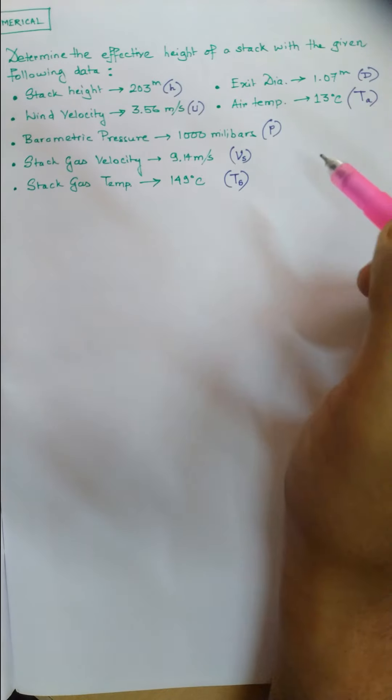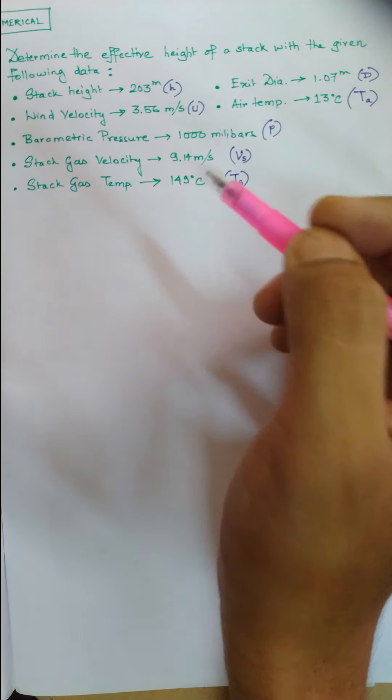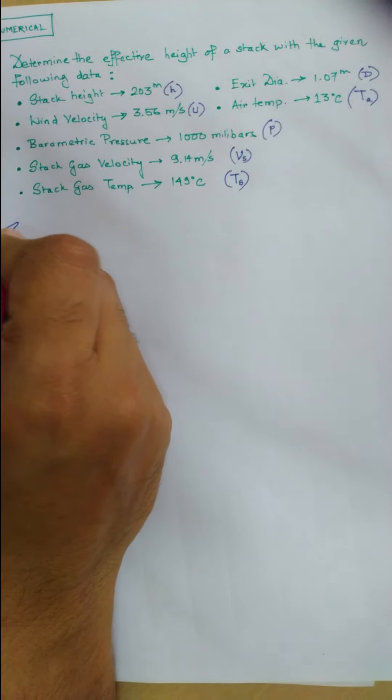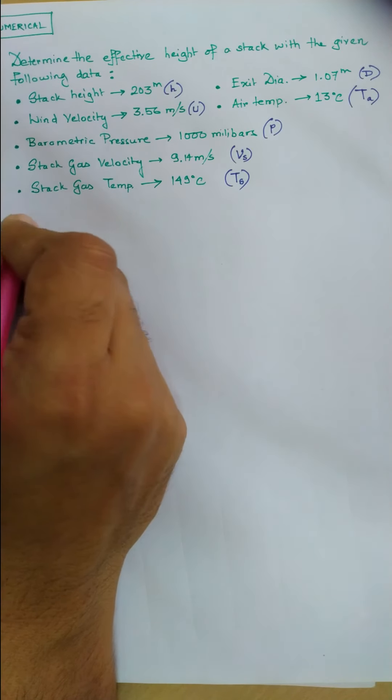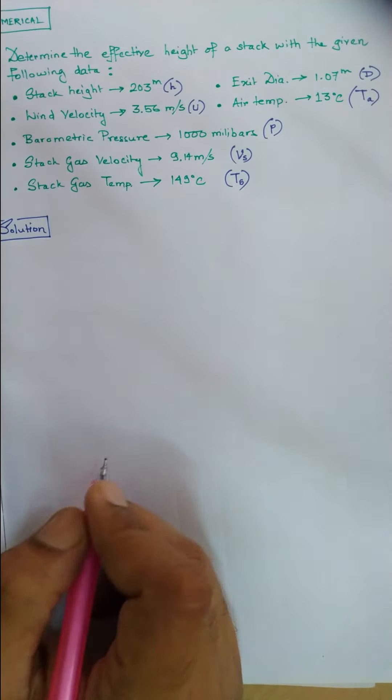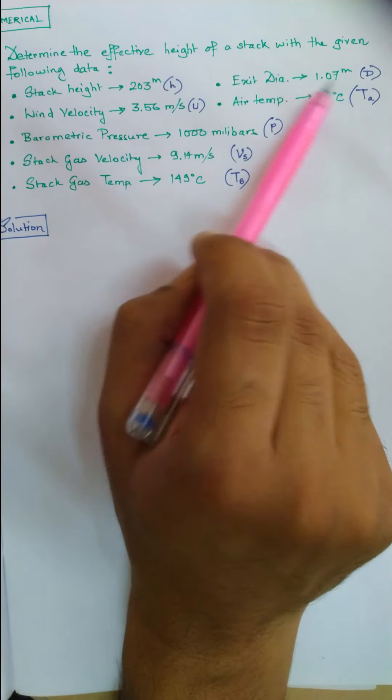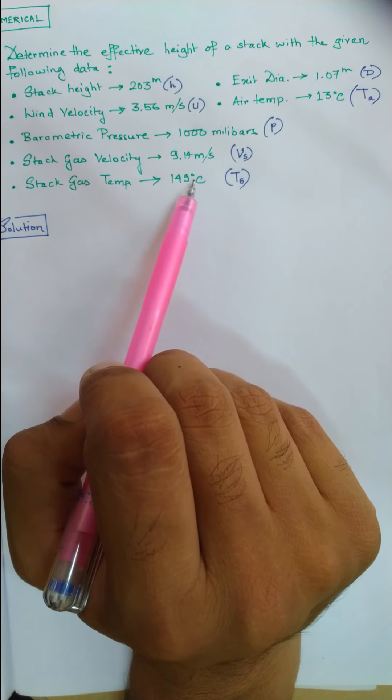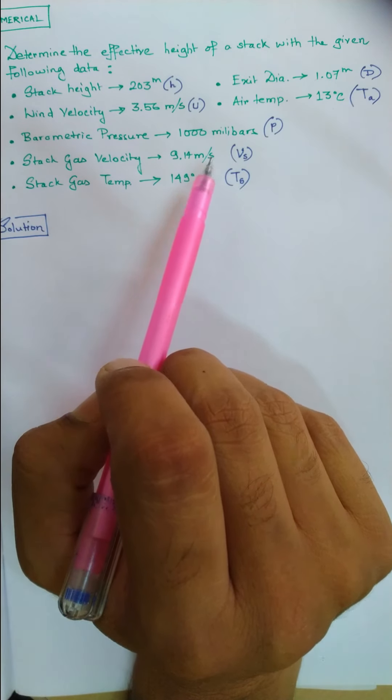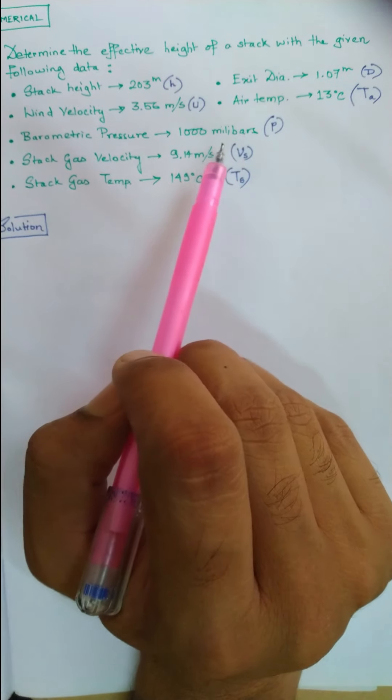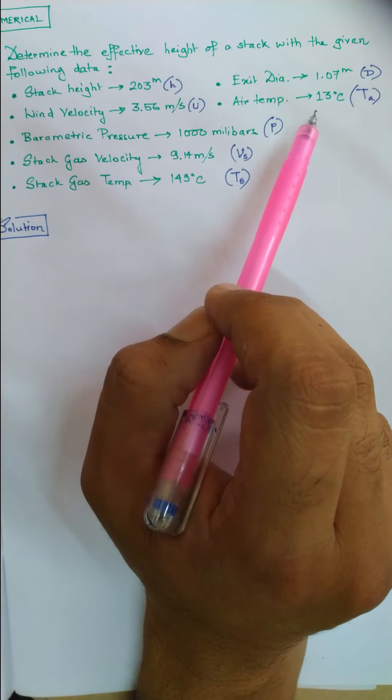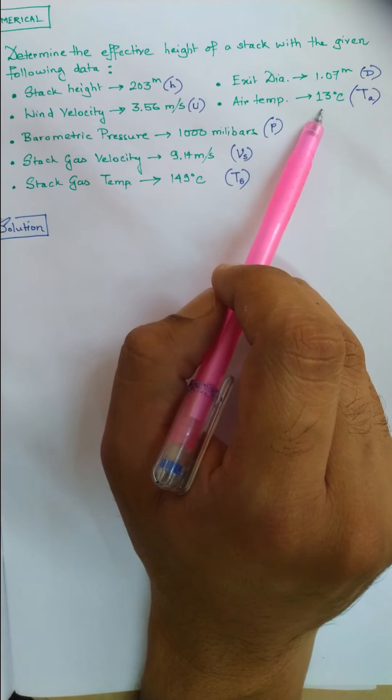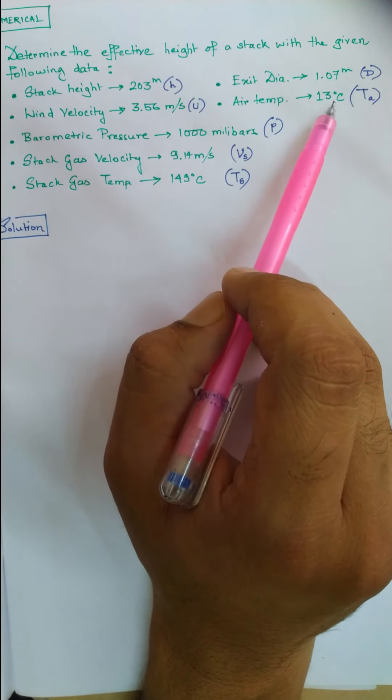We just need to put these values in the equation and solve. It's a three-minute problem. For information, note that these temperatures are given in degrees Celsius, but to put values in the equation, we need them in Kelvins. The simple conversion from Celsius to Kelvin is: degrees Celsius plus 273 equals degrees Kelvin.